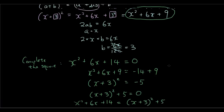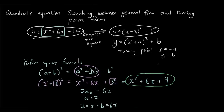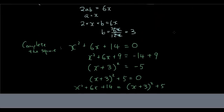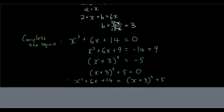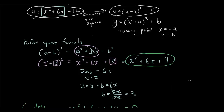Which is what we wanted to do — changing from the general form to the turning point form. So now we know without even drawing the graph that y equals x squared plus 6x plus 14 will have a turning point at x equals negative 3 and y equals 5. That concludes our tutorial on how to change from general form to turning point form. Thanks for watching, see you next time.